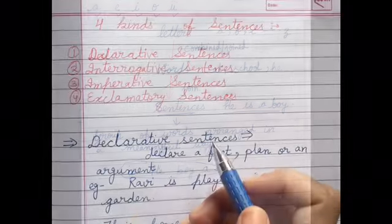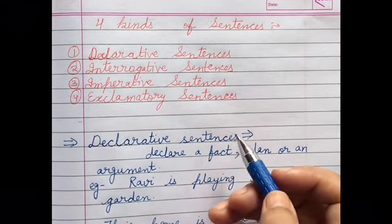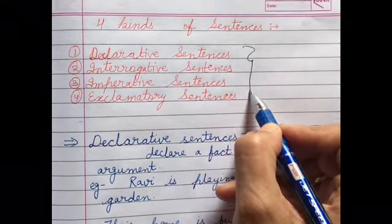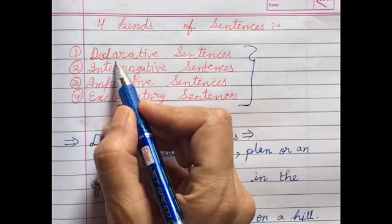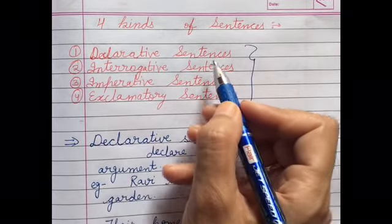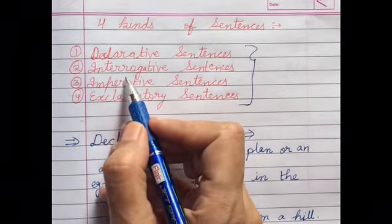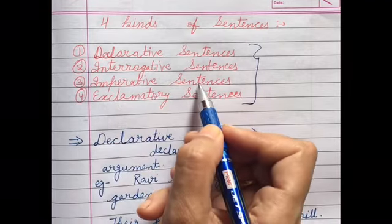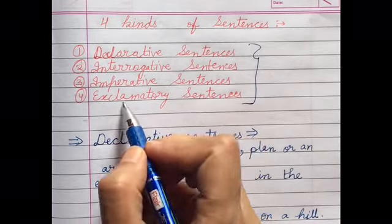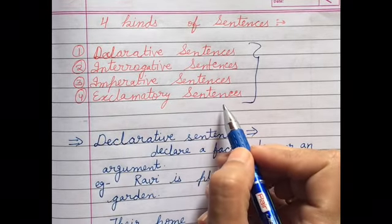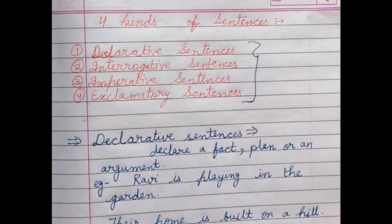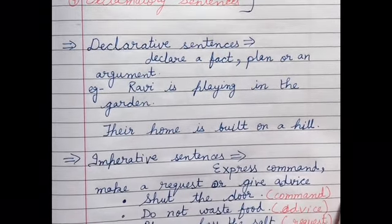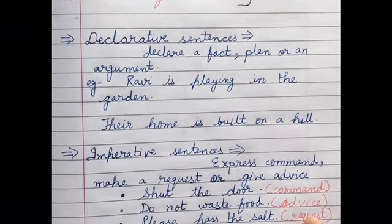So after studying what a sentence is, we have four kinds of sentences. The first is declarative sentences, the second is interrogative sentences, the third is imperative sentences, and the fourth is exclamatory sentences. Now let's take up each one to understand exactly what these sentences are.